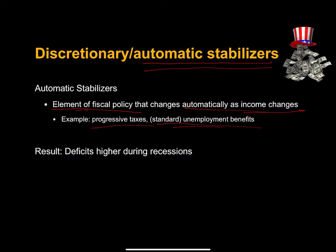Another example of automatic stabilizers is standard unemployment benefits. The rules already exist — when a recession hits, people get laid off, they file for unemployment benefits, and they receive those benefits without additional laws being passed. We may sweeten these unemployment benefits with discretionary policy, but that takes time. Because we have these automatic stabilizers in place, and because of our progressive tax system, deficits are often higher during recessions.